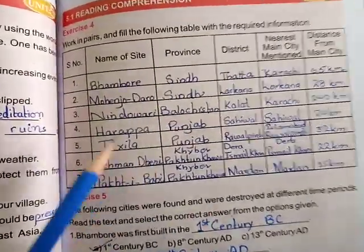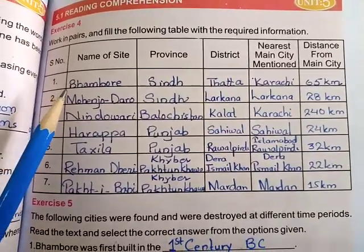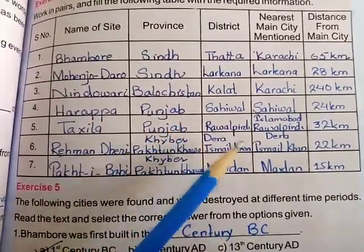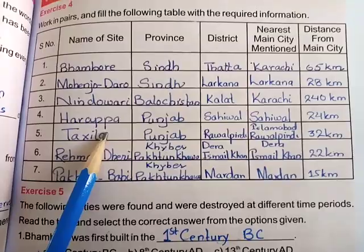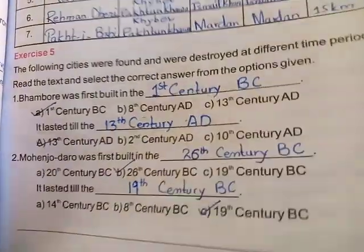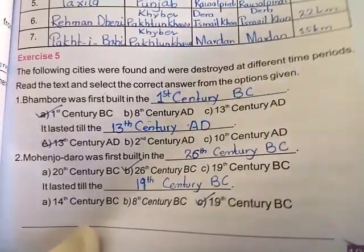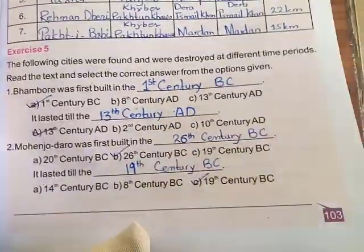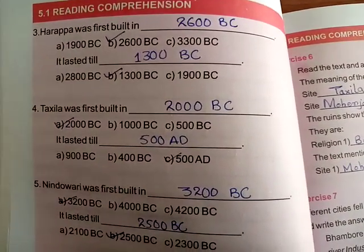You can check your answer now. Moving towards Exercise Number Four, it is a table and you will have to put the information accordingly. In the first column you write the name of the site, then mention the province, district, nearest main city, and distance from that main city. Exercise Number Five is also a fill-in-the-blank exercise where you write the century, the era when a city was built, and when it was abandoned and destroyed.